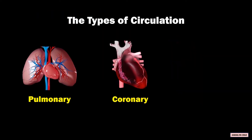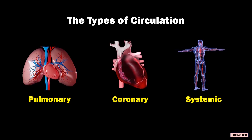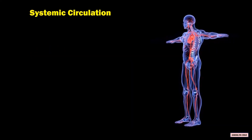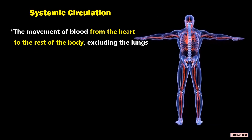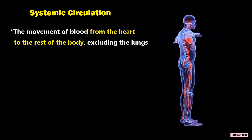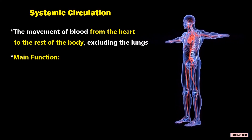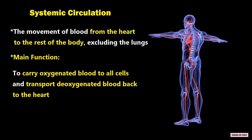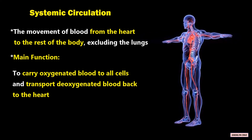The third circulation is systemic circulation. Systemic circulation is the movement of blood from the heart to the rest of the body, excluding the lungs. The main function of this circulation is to carry oxygenated blood to all cells and transport the deoxygenated blood back to the heart.